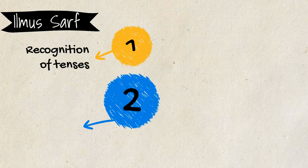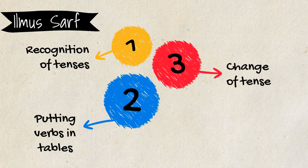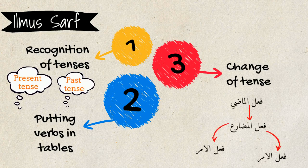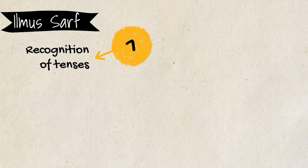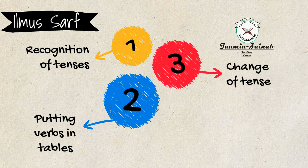Not only will you be able to recognize the tenses, but you will also be able to change the tenses — for example, from fi'lul madhi to fi'lul mudhori, from fi'lul mudhori to fi'lul amr, from fi'lul amr to fi'lul nahhi. You will also be able to organize the verbs in tables referred to as conjugation tables.